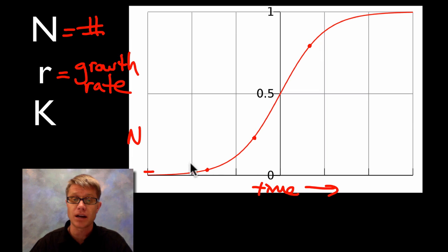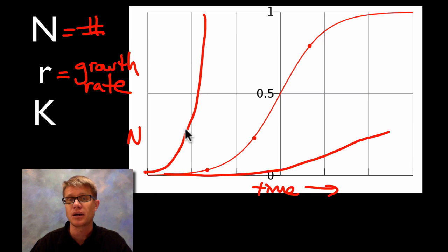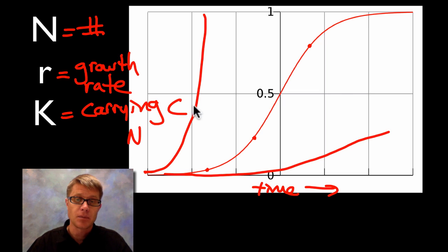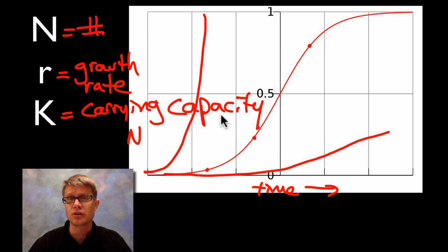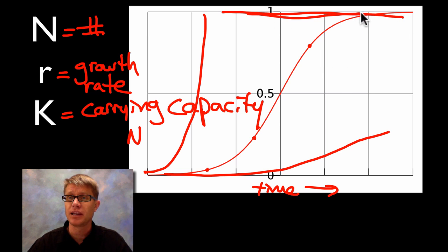The curve isn't always radical; sometimes it's really gradual, sometimes incredibly quick depending on what the R value is. The last variable is K. K stands for carrying capacity — basically that means in an area, for a certain population, there's a maximum amount that can be supported. That's where the limit is, and the population will eventually level out at that carrying capacity.